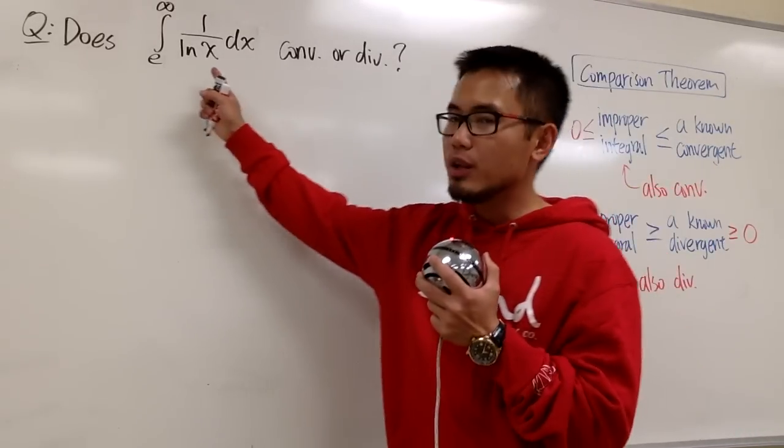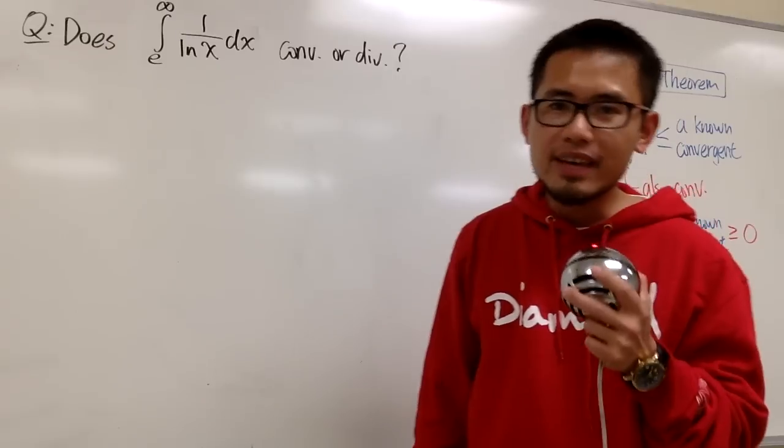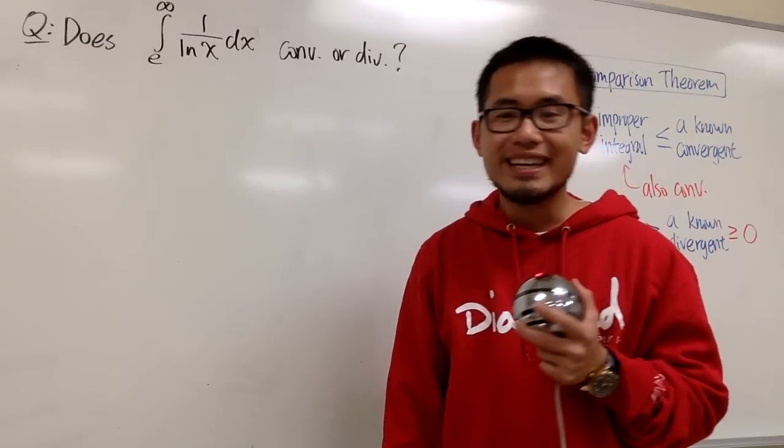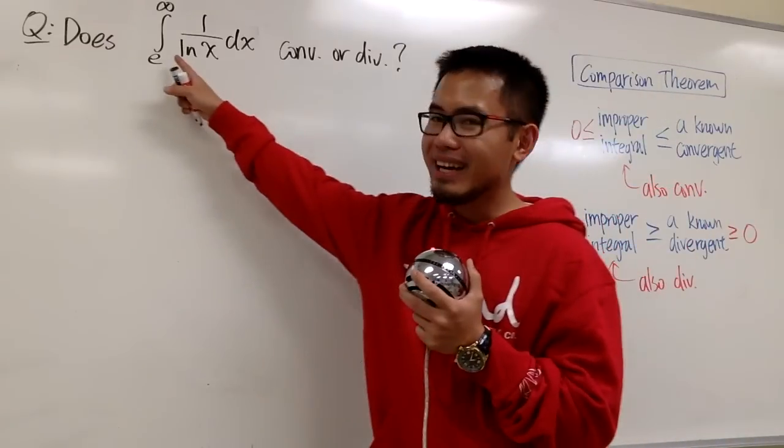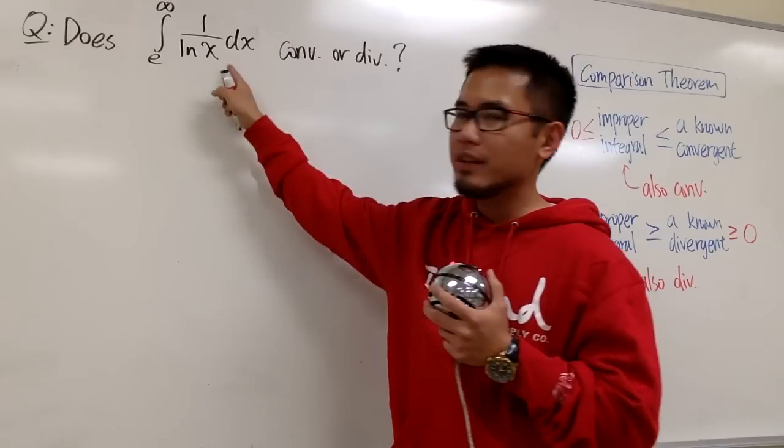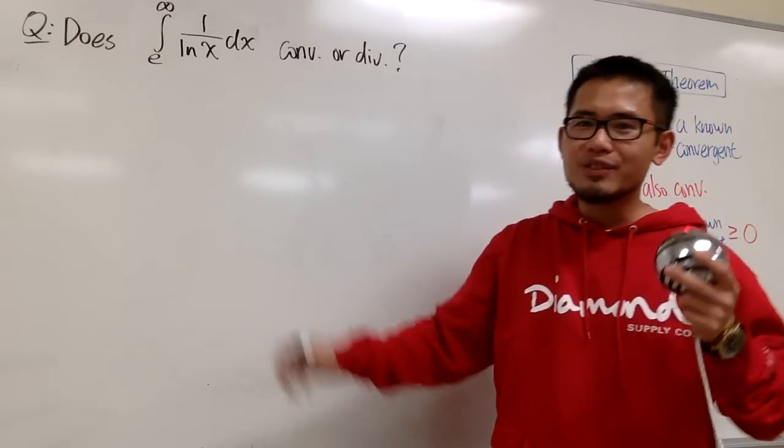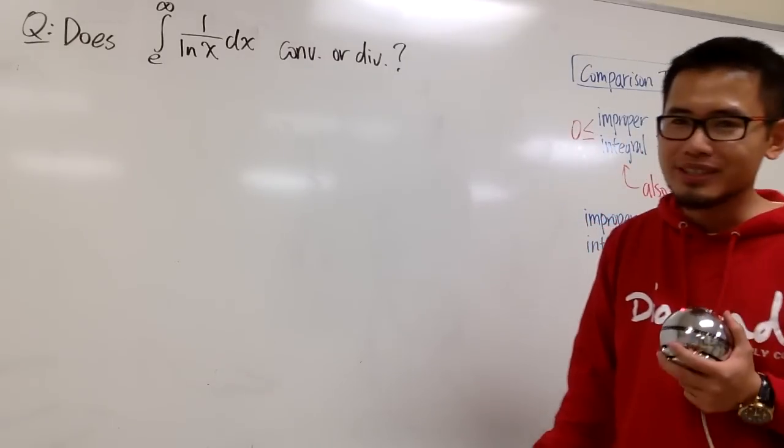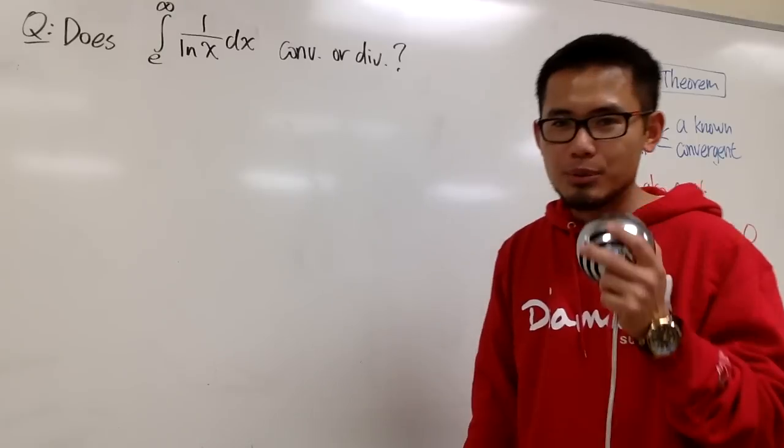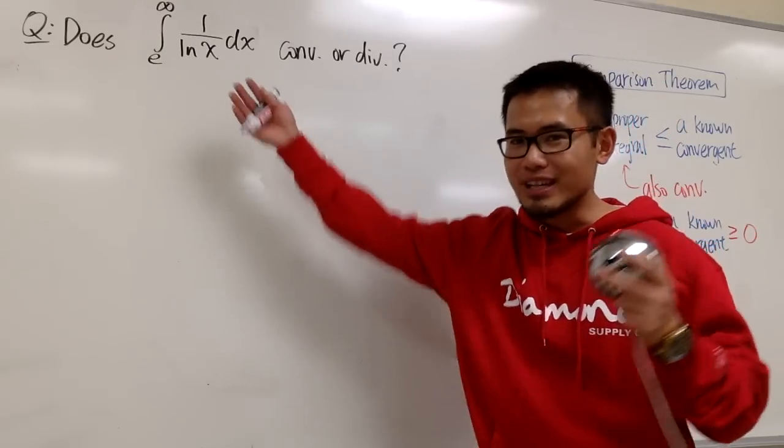So here we are going to see if this improper integral converges or not, and once again, we will be using the comparison theorem for this. The truth is that we cannot integrate 1 over ln(x). That has no answer for the integral. It is non-elementary, but it's okay because for comparison theorem, we don't have to integrate that directly anyways.